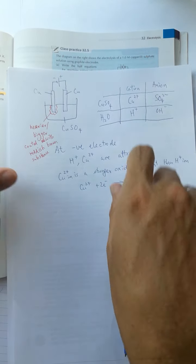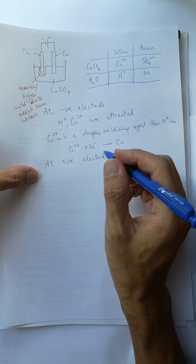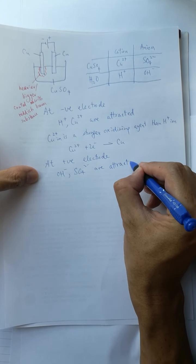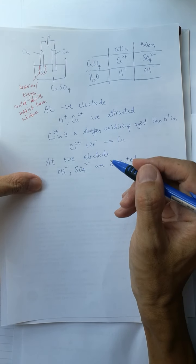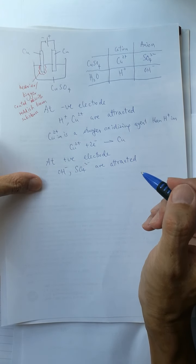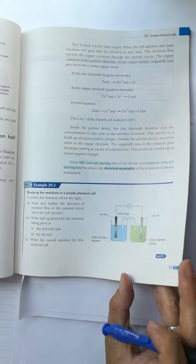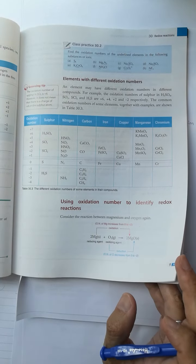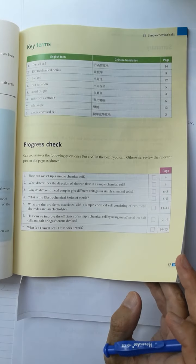How about the positive electrode? At the positive electrode, the hydroxide ion and sulfate ion are negatively charged and are attracted toward it. Both want to lose electrons. The hydroxide ions lose four electrons forming oxygen and water, while the sulfate ion also wants to lose electrons forming SO₂ and water.